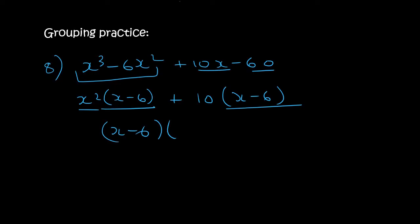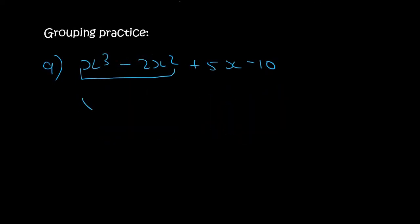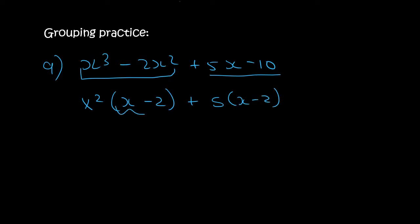In the first two terms we take out a common factor of x squared and we're left with x minus 2. In the second two terms we take out a 5 and are left with x minus 2. So x minus 2 is now common — we take that out in the front and then we're left with x squared plus 5.